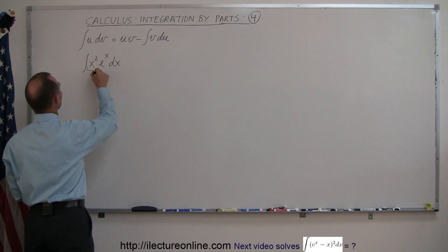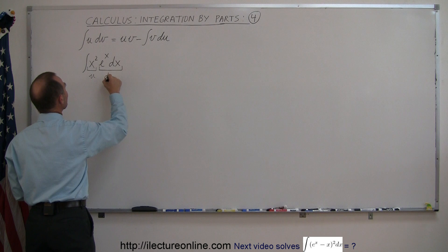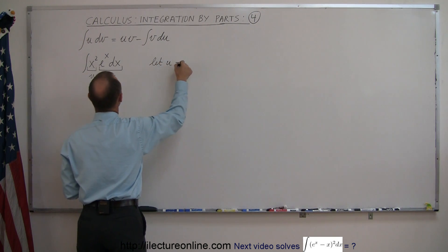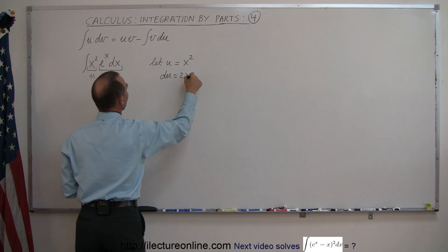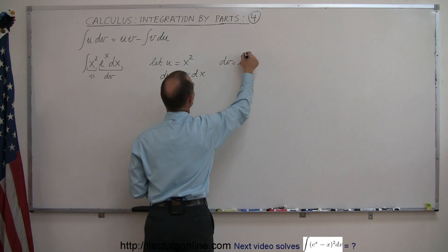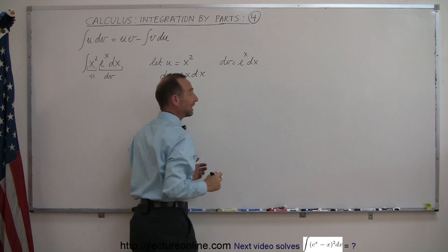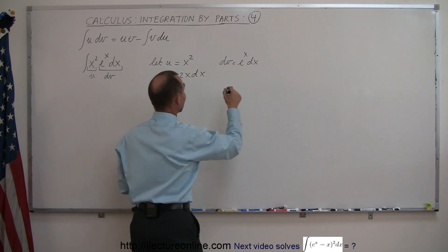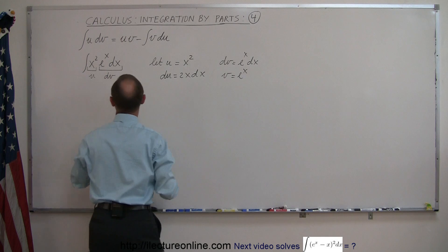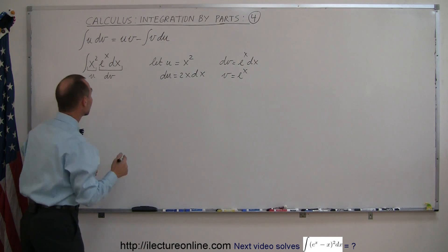So we're going to let this here be u, and we're going to let this here be dv. So then let u equals x squared. So du will then be 2x dx, and then our dv will be equal to e to the x dx. And when we integrate e to the x dx, we simply get e to the x. And then we substitute that back into our integral, or at least we set it equal to our integral.